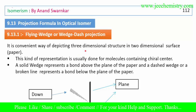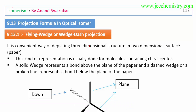There are different types of Projection Formulas for Optical Isomers. The most important ones are: Wedge-Dash Projection Formula (also called Flying Wedge), Fischer Projection Formula, Newman Projection Formula, and Sawhorse Projection Formula. We will learn these one by one, and we will also learn the interconversion from one Projection Formula to another.